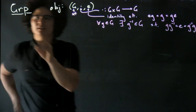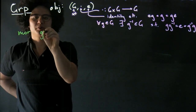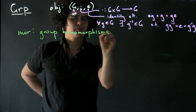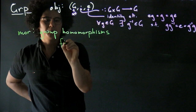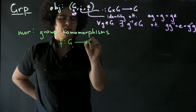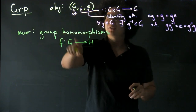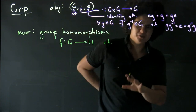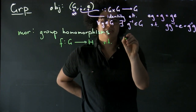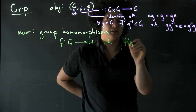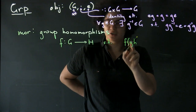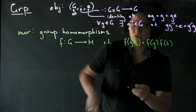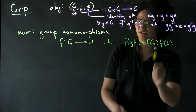The morphisms in this category are group homomorphisms. What is that? That's a function between groups — again, suppressing most of the notation and just writing down the set with the multiplication to be understood — such that it preserves the multiplicative structure. So we want F(g·h) = F(g)·F(h), where the multiplication on the left takes place in G and the multiplication on the right takes place in H.